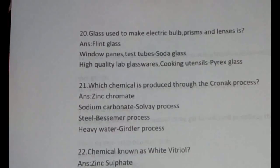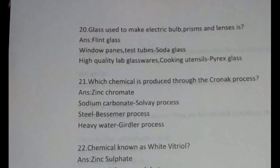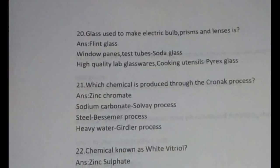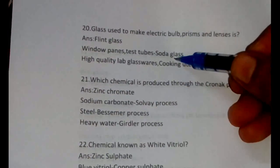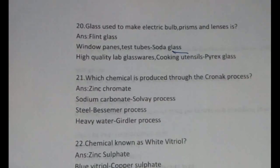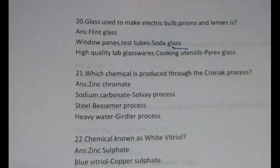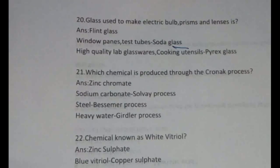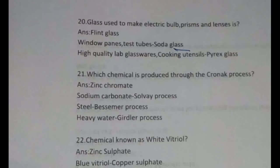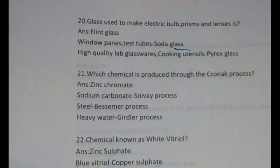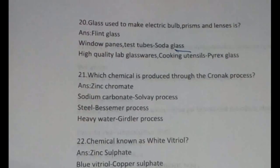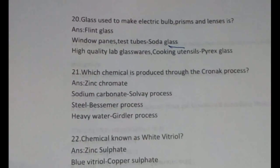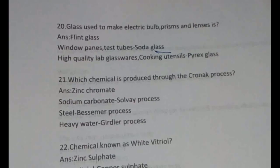The glass used to make electric bulbs, prisms, and lenses is flint glass. Window panes, test tubes, etc. are made by soda glass. For cooking utensils and high-quality lab glassware it is Pyrex glass. For those preparing for PG, this is important information from the ceramics chapter.